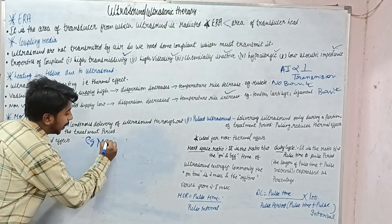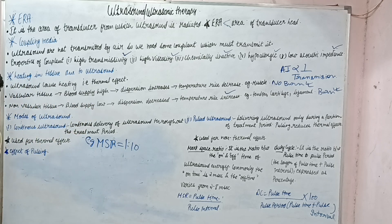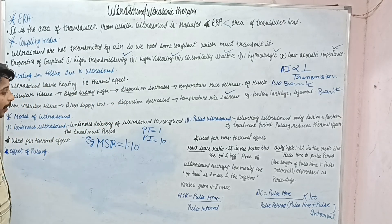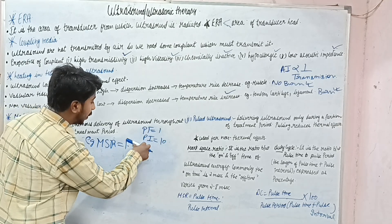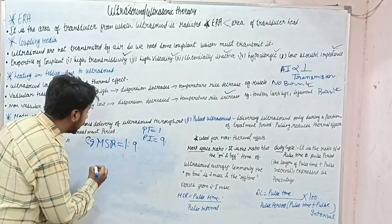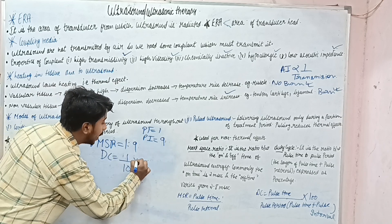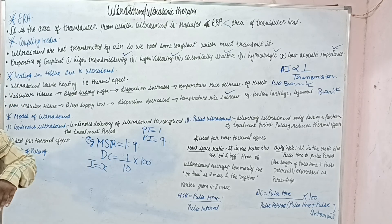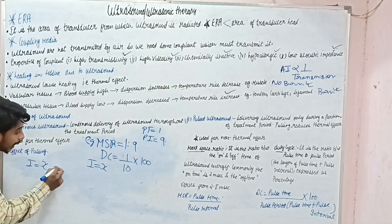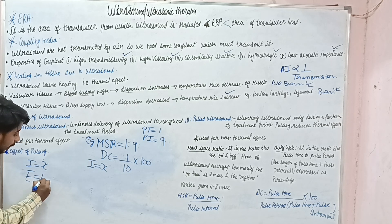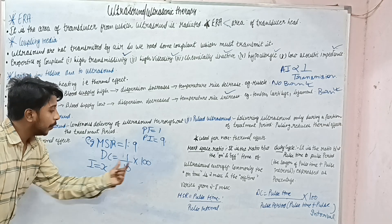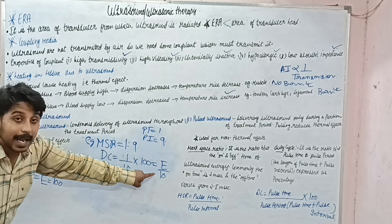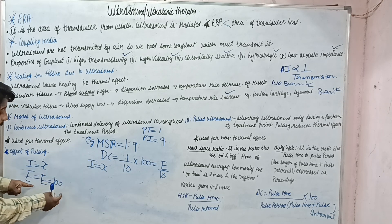Another example: mark space ratio is 1:9. Pulse time is 1, pulse interval is 9. Duty cycle = 1 / (1+9) × 100 = 10%. If intensity X is used in pulsed mode and the same intensity X is used in continuous mode delivering energy E (taken as 100), then pulsed mode delivers only E/10. So energy delivery is 10 times less compared to continuous mode at the same intensity.